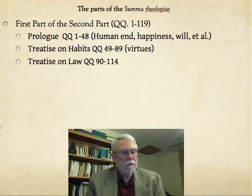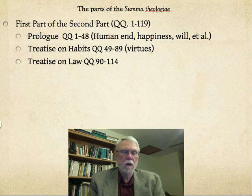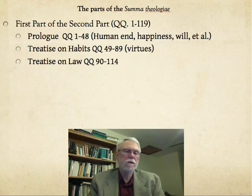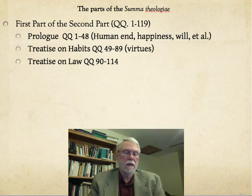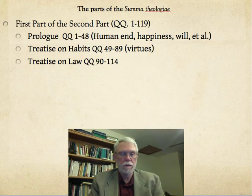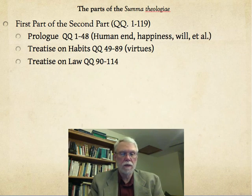The first part of the second part has 114 questions. The prologue has questions 1 through 48, and this concerns such things as the end of human existence, happiness for human beings, the nature of divine will, and many related things. The treatise on habits is closely related to Aristotle's discussion of virtues and discusses virtues, both natural and supernatural virtues — a very interesting account. And then the treatise on law, which deals with, among other things, natural law.